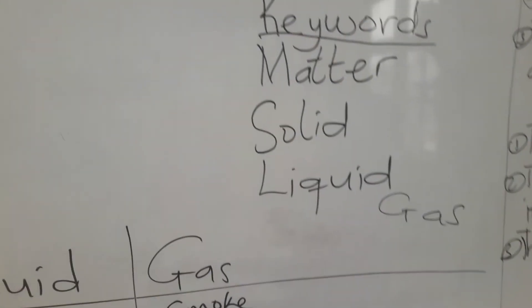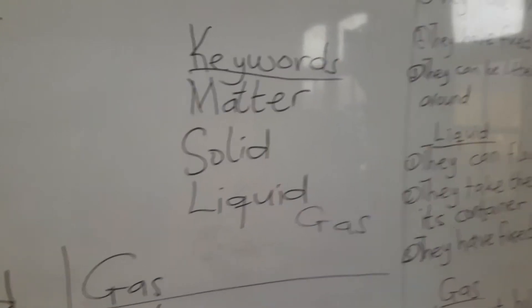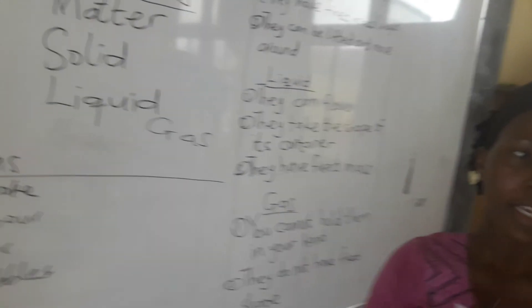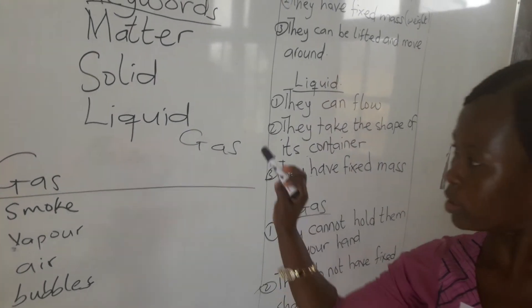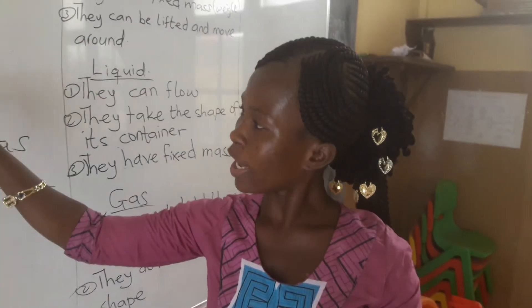With my book and everything on this table, all these are materials in our environment. So we are seeing what matter is. There are three states of matter: the first one is solid, the second one is liquid, and the last one is gas.